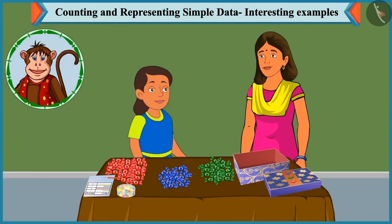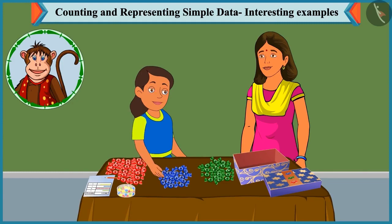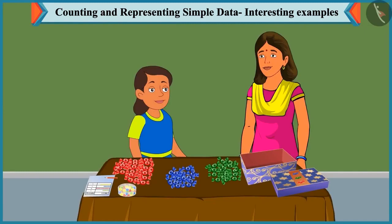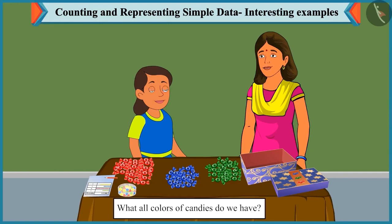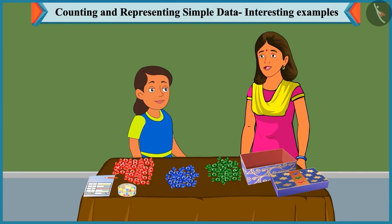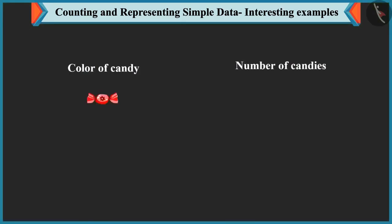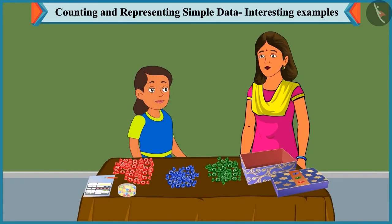Bubbly groups all the candies by color and counts each group. Mummy asks what colors of candies they have: red, blue and green. Bubbly reports the numbers: 25 red color, 19 blue and 21 green color candies. Absolutely right — very good!